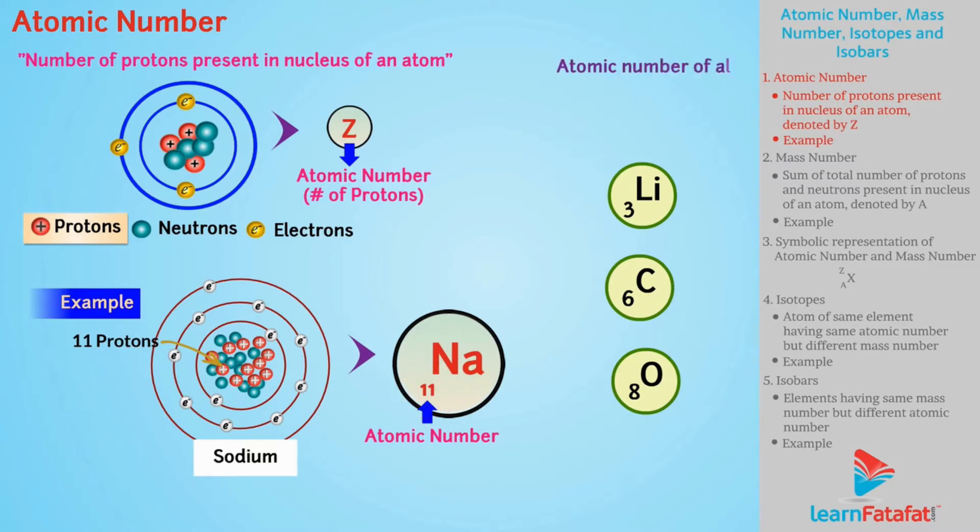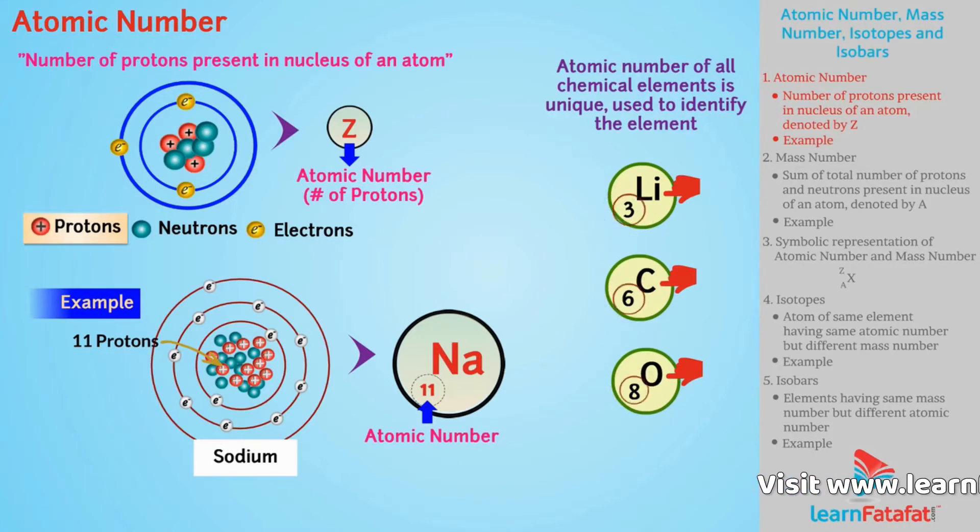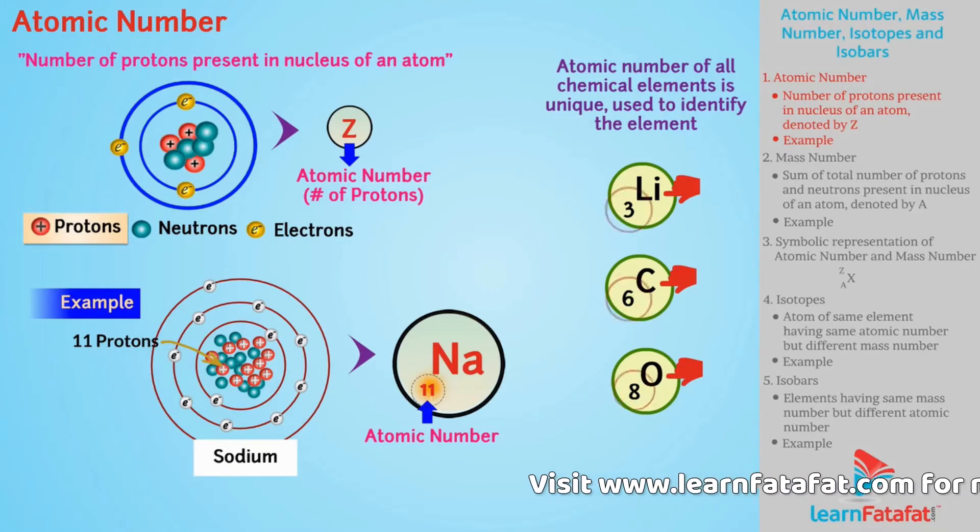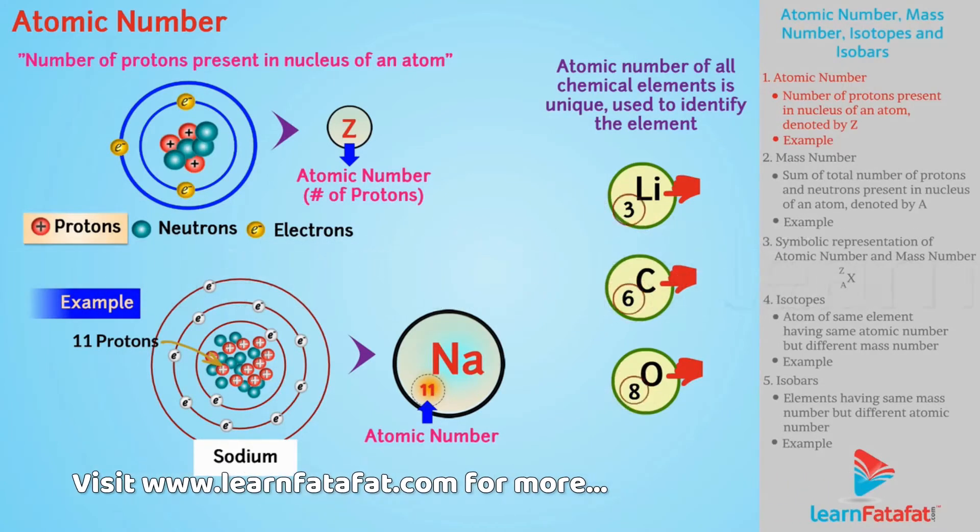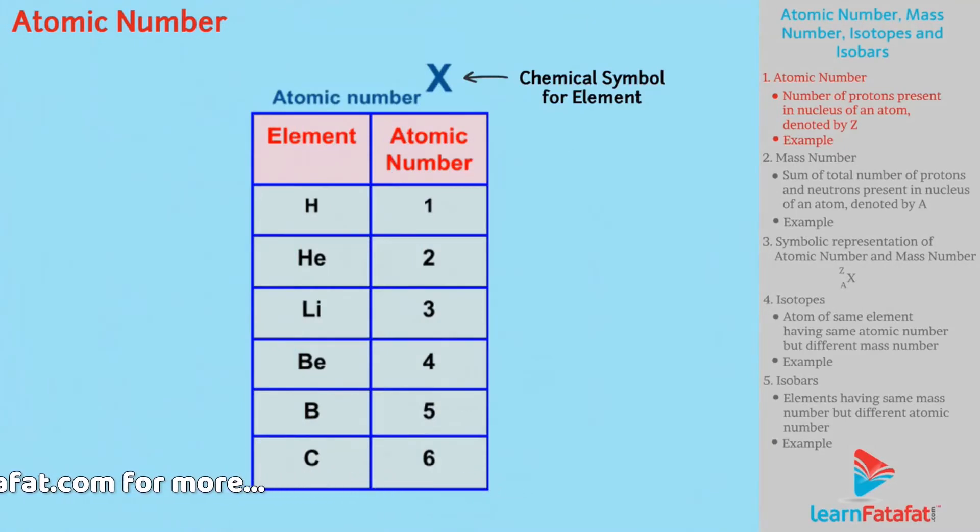Atomic number of all chemical elements is unique, which is used to identify that element. For example, only sodium will have atomic number 11 and hence, atomic number 11 defines sodium element. Atomic number of some elements are shown in the table.